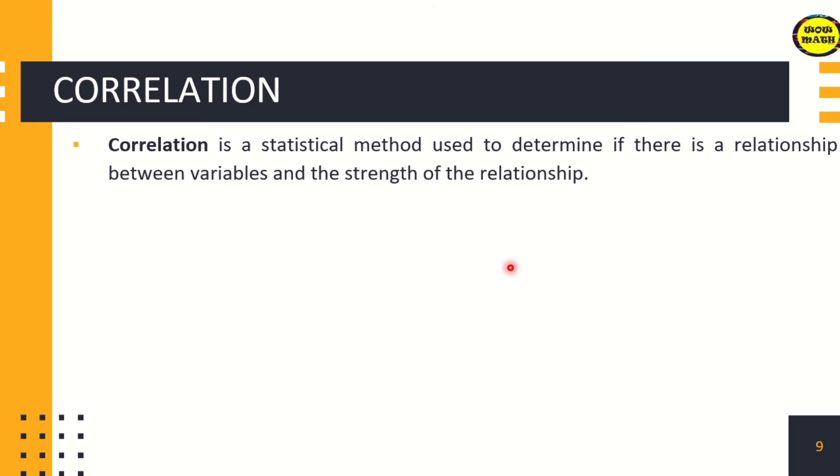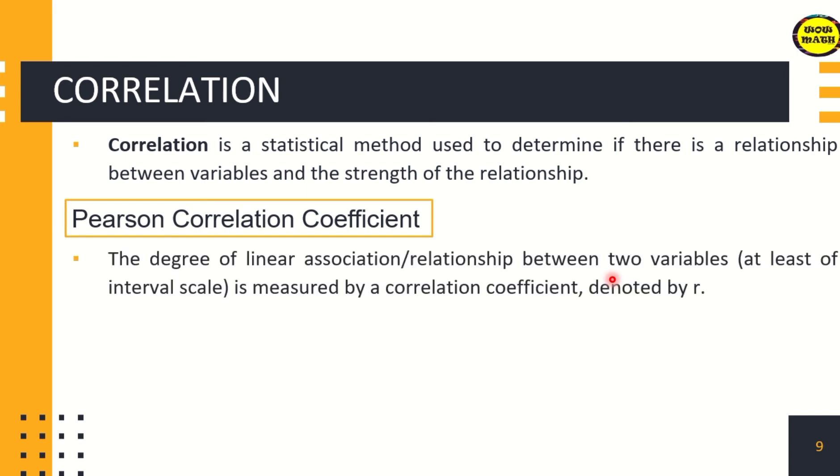Correlation is a statistical method used to determine if there is a relationship between variables and the strength of the relationship. When our research is about correlation, we are studying the relationship between two variables. We commonly use the Pearson correlation coefficient.